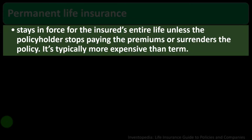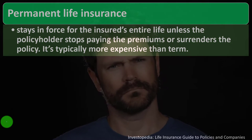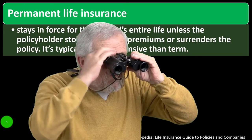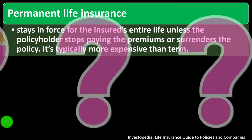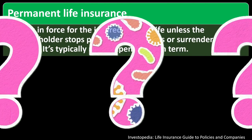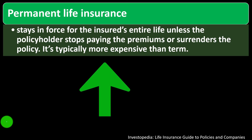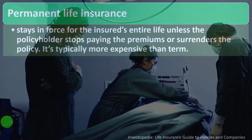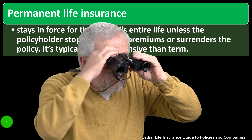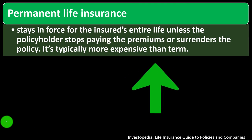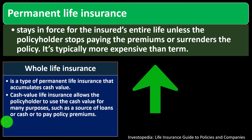Permanent life insurance, on the other hand, stays in force for the insured's entire life unless the policyholder stops paying the premiums or surrenders the policy. It's typically more expensive than term. The permanent is going to be more complex because if you're not setting a fixed term, you'd have more complex actuarial calculations — determining the likelihood of when you're going to die. With large aggregate numbers, they can start to figure out their calculations and premiums.